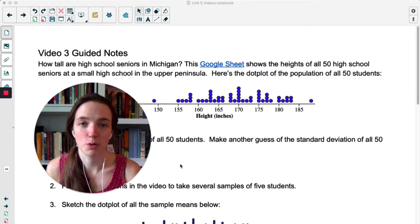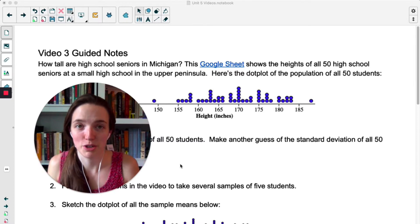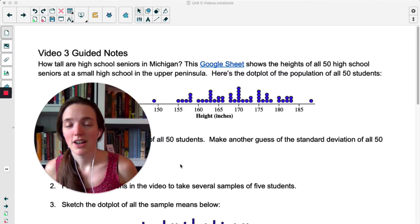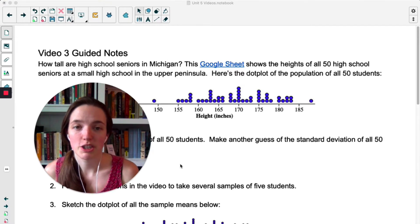So in the last video, the question was categorical: Are the Reese's pieces orange? Yes or no? And we looked at a proportion of orange Reese's pieces. Today, we're going to be asking what is the height of high school students? That's not a categorical variable. They're going to give us a number. We have a quantitative answer, which means we're looking at the mean, not the proportion.